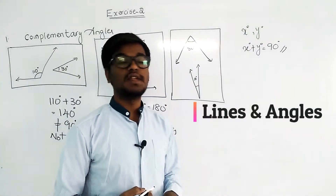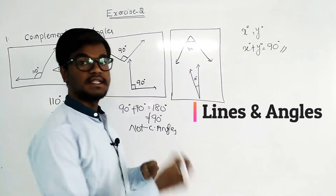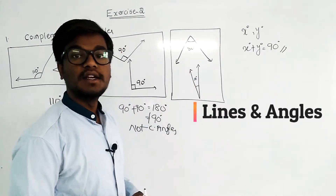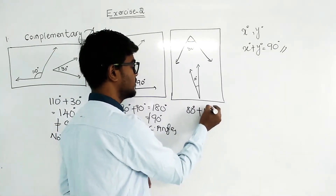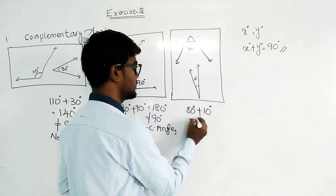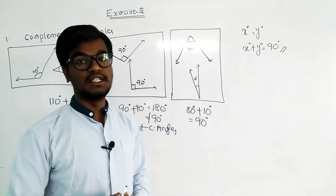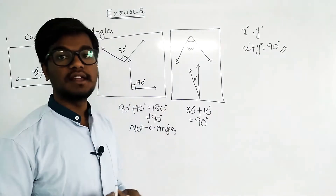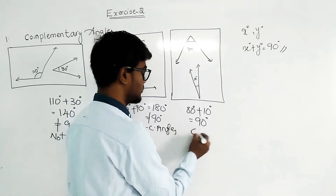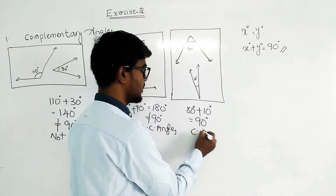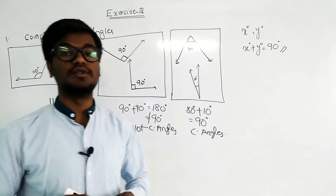The third pair: the first angle is 80 degrees and the second is 10 degrees. Add 80 degrees plus 10 degrees — you get 90 degrees. The sum of the two angles is 90 degrees, so the given two angles are complementary to each other. The given angles are complementary angles.